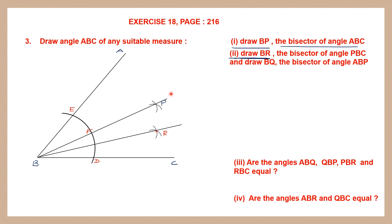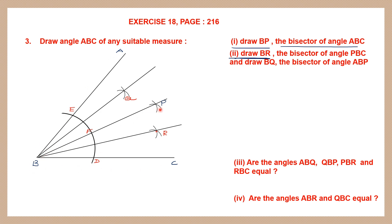Now draw BQ, the bisector of angle ABP. From B we're going to draw one more bisector BQ, bisecting this angle. We place a compass needle at F and draw an arc, then at E and cut that arc. The point of intersection is named Q. Join BQ — so BQ is the bisector of angle ABP. So: we bisected ABC with bisector BP, then bisected PBC with bisector BR, then bisected ABP with bisector BQ.